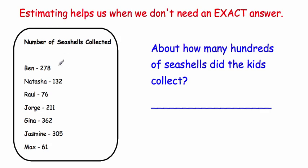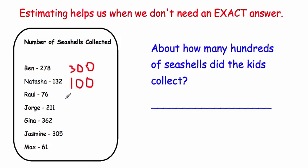You can see that there are seven kids here: Ben, Natasha, Raul, Jorge, Gina, Jasmine, and Max. We want to round to the nearest hundred. Ben has 278 seashells — the nearest hundred is 300 because 78 is more than 50. Natasha's nearest hundred is 100 because 32 is less than 50.